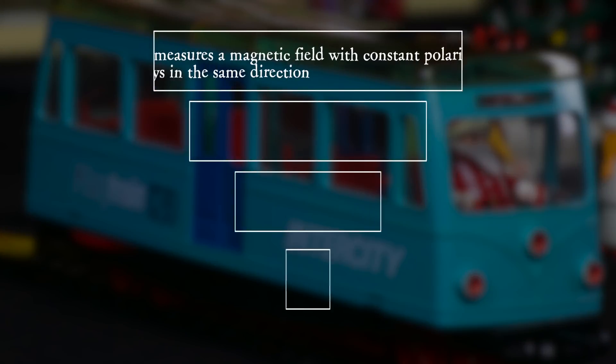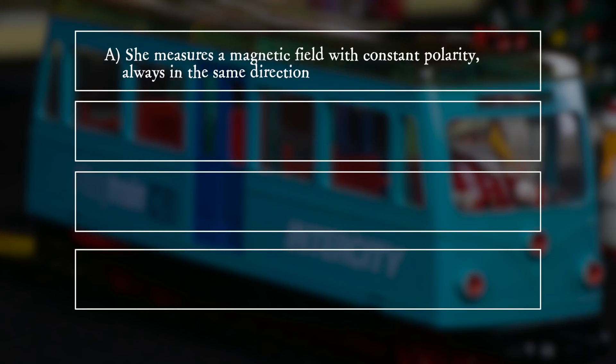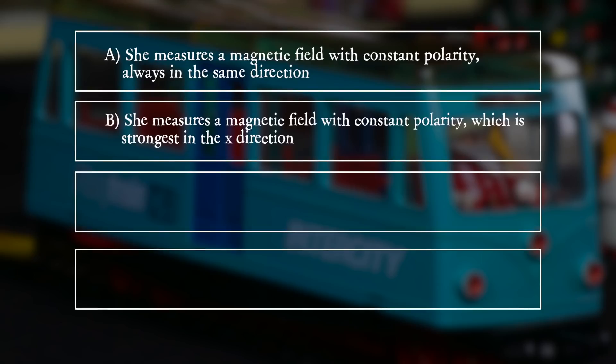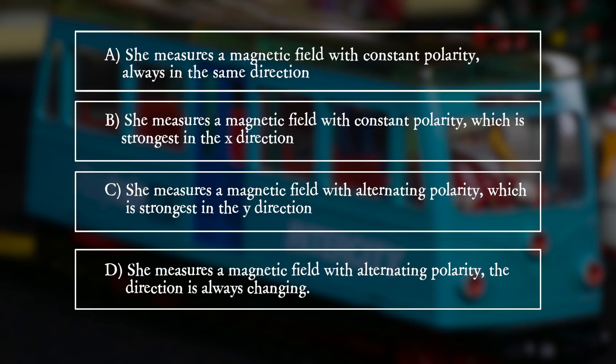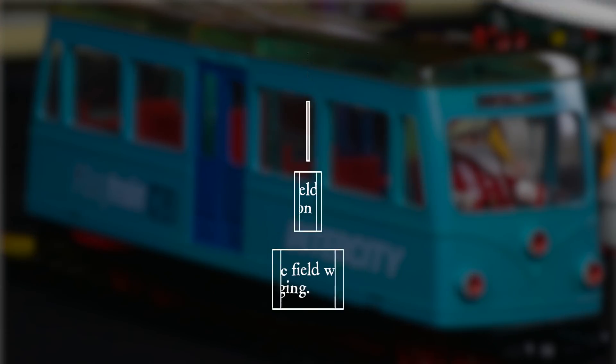What does Mrs. Santa observe? A) She measures a magnetic field with constant polarity, always in the same direction. B) She measures a magnetic field with constant polarity, which is strongest in the x direction. C) She measures a magnetic field with alternating polarity, which is strongest in the y direction. D) She measures a magnetic field with alternating polarity, and the direction is always changing.